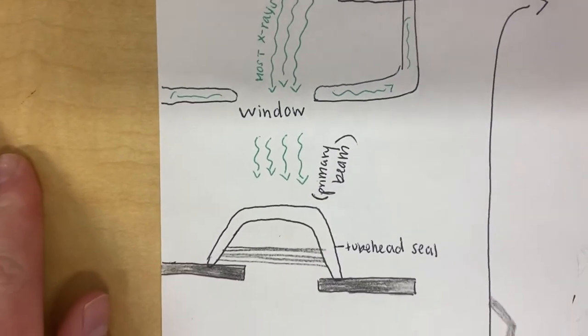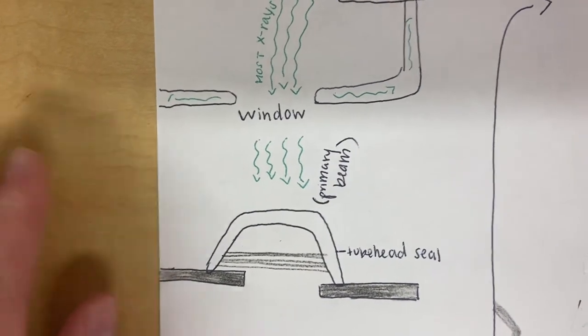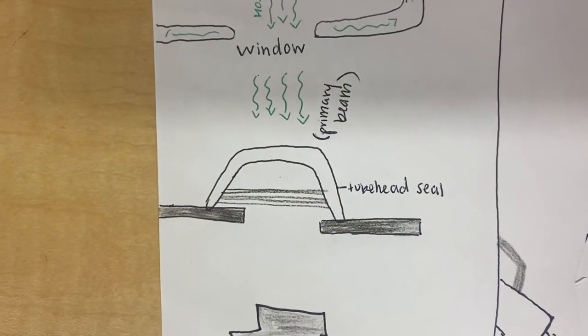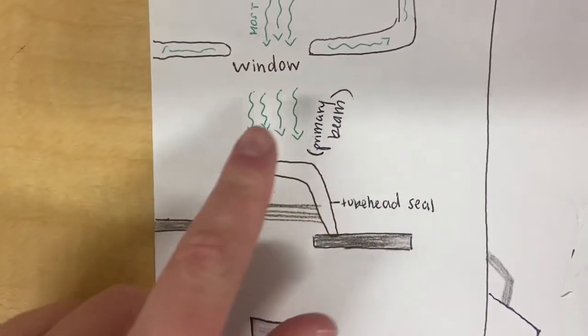The useful and primary beam will exit the window, right here. Then, the X-rays will go past the tube head seal and the unleaded glass window.